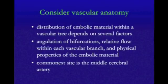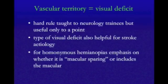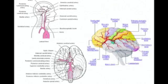The distribution of embolic material within stroke is dependent on a number of factors, but it really is dependent on plumbing. If we think about the angulation of bifurcations and flow within each vascular branch, the largest calibre vessel that is most direct, with fewer bifurcations and the most flow, is going to have the most strokes. The majority of strokes occur from cardiac source in atrial fibrillation, large artery embolus in the aortic arch, or from carotid atheroma — tending to go up the internal carotid into the middle cerebral artery.